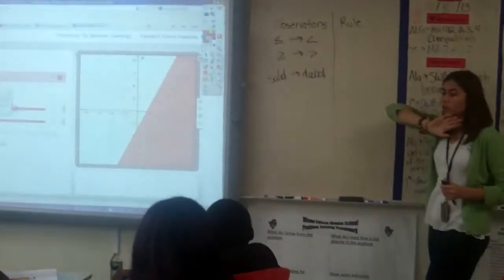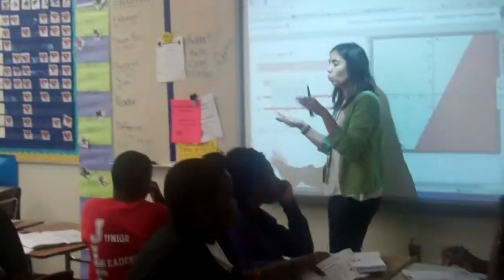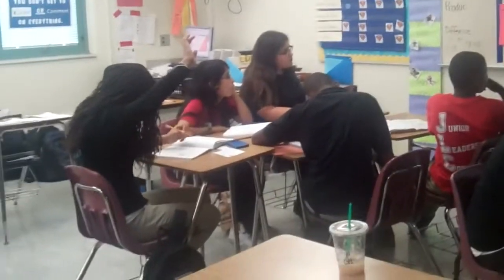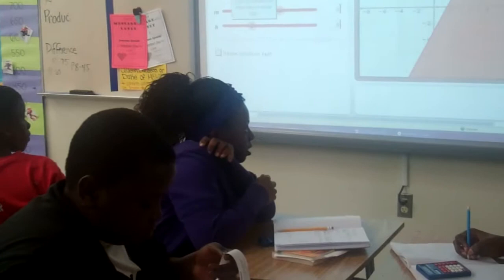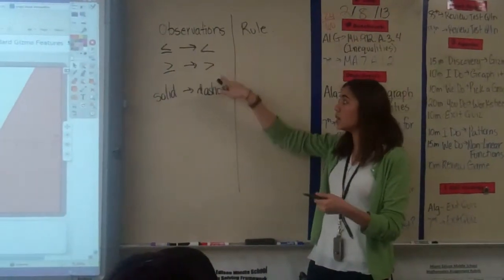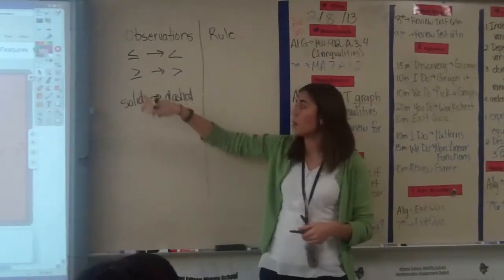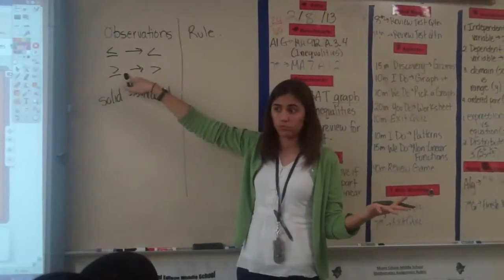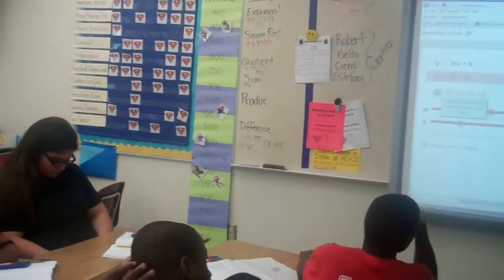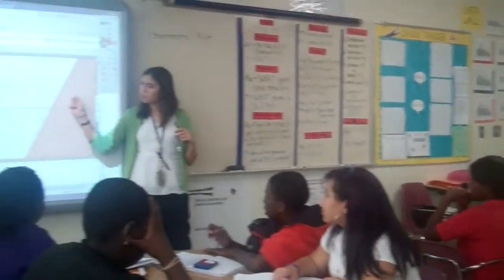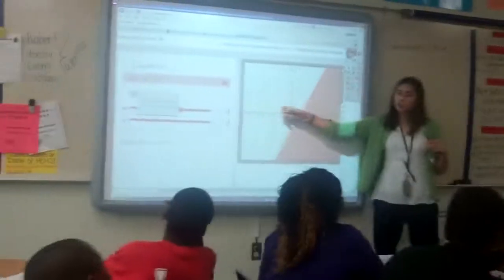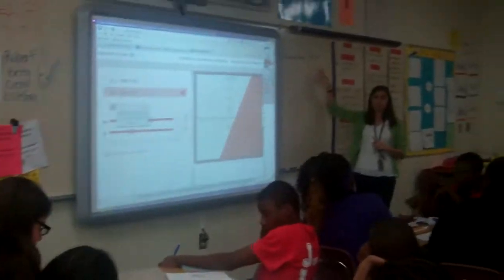Now we've got to come up with a rule — a rule that will always work. When are we going to use dashed, and when are we going to use solid? Alicia: if there's no equal sign under the greater than or less than, then it will be dashed. If there is an equal to sign, then it will be solid. Now let's talk about why this side is being shaded and why this side is not.